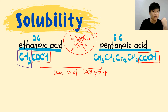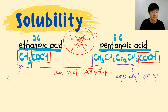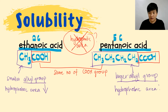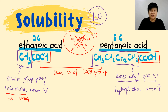Since hydrophilic area is the same, there is only one factor left: hydrophobic area — relating to the alkyl group. Pentanoic acid has a larger alkyl group, while ethanoic acid has only one carbon as its alkyl group — a much smaller alkyl group. Your alkyl group is your hydrophobic area: the smaller the alkyl group, the smaller the hydrophobic area; the larger the alkyl group, the larger the hydrophobic area.